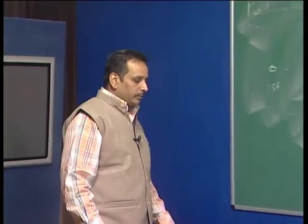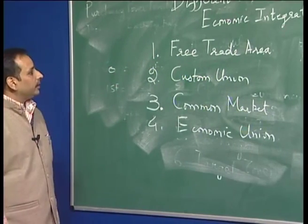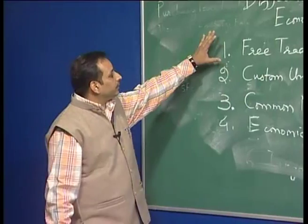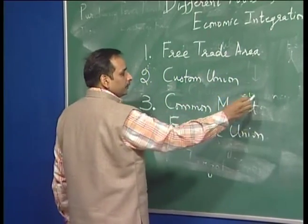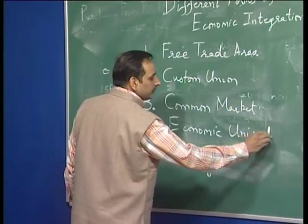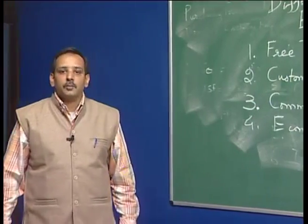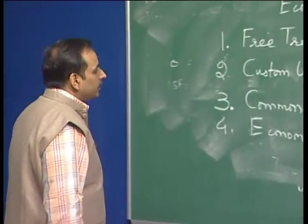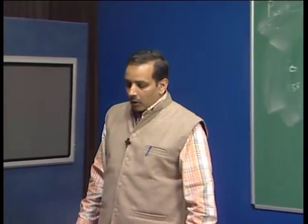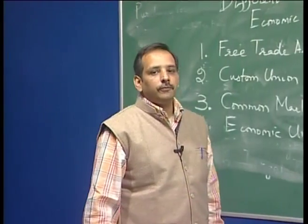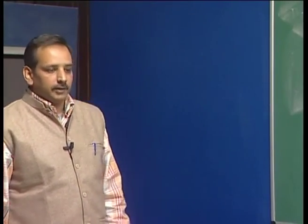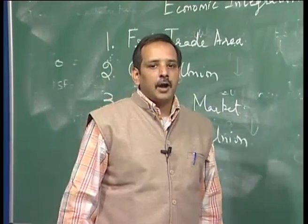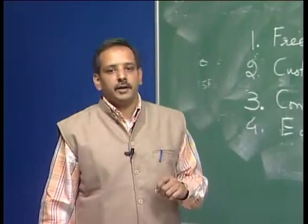What we could learn from this is that most developing countries are only at the first form of economic integration. What we could achieve in future is the customs union, a common market among South Asian countries, and eventually reach the highest stage of economic union among ourselves. The second option is to try to be a member of the European Union. To be a member of the European Union, there are certain criteria defined by the Maastricht Treaty.